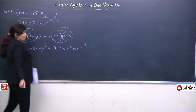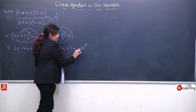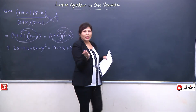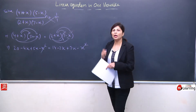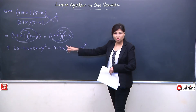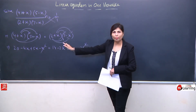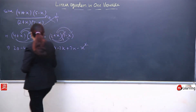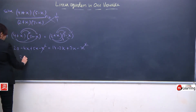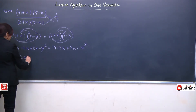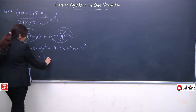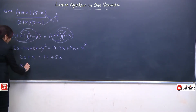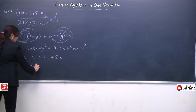Pehle jo directly eliminate ho raha hai, hum usse directly eliminate karenge — ye bhi minus x square hai aur ye bhi minus x square hai. Isko jab hum LHS se RHS mein laenge toh iska sign change hoga: minus x square udhar aake plus x square ho jayega, toh dono cancel hokar 0 denge. So maine direct hi cancel kar diya. Now 20 minus 4x plus 5x — like terms collect karte hain.